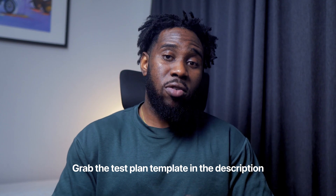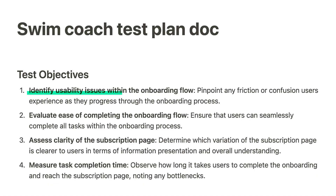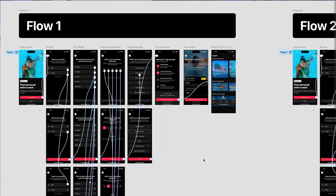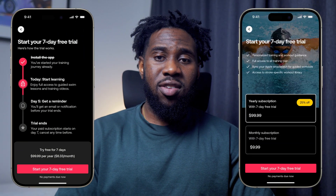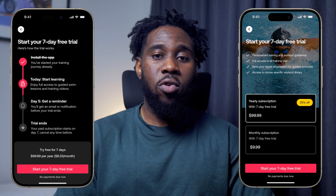The four key objectives of this test are to identify any usability issues within the onboarding flow, evaluate ease of completing the onboarding flow, assess the clarity of the subscription page, and measure the task completion time. We'll test two variations of the app's onboarding flow. The main difference between both variations is the subscription screen at the end of the flow, and our main goal is to identify which subscription screen is clearer to users when conducting the test with Listener.